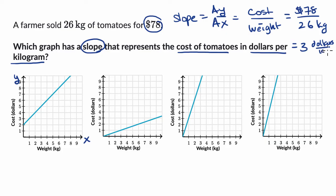$3 per kilogram. So that's what the unit price is. How much the farmer is getting per kilogram of tomatoes. So let's see which of these slopes match up to that. Essentially have a slope of three. Every time the kilogram increases by one, our dollars should increase by three.